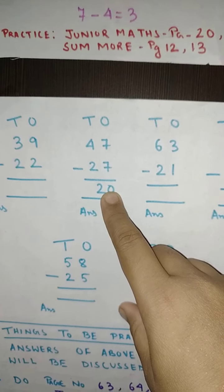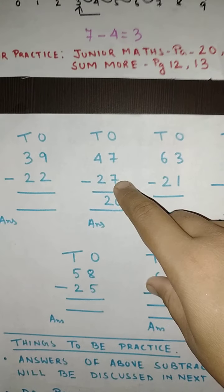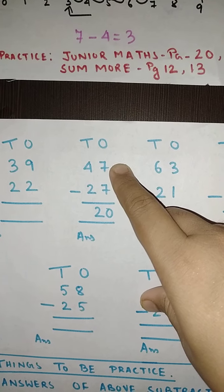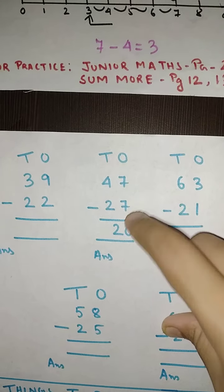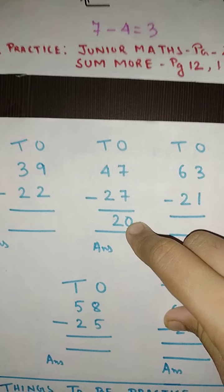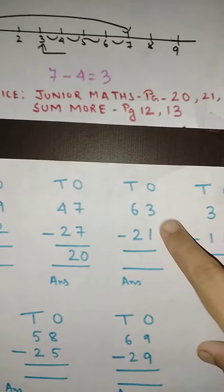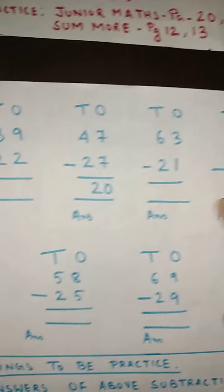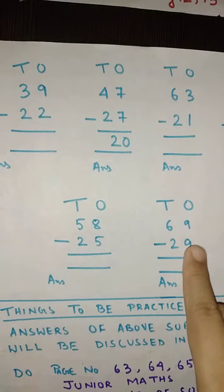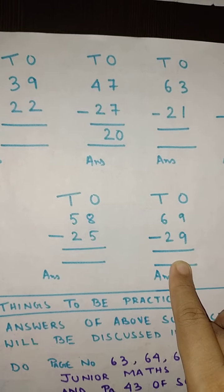Next is 39 minus 22. 47 minus 27. Now here students you will notice one thing. That this is here also 7 and here also 7. So my bigger number and my smaller number is same. So what I will write? I have written here 0. And next is 63 minus 21, 37 minus 13, 58 minus 25, and 69 minus 29.